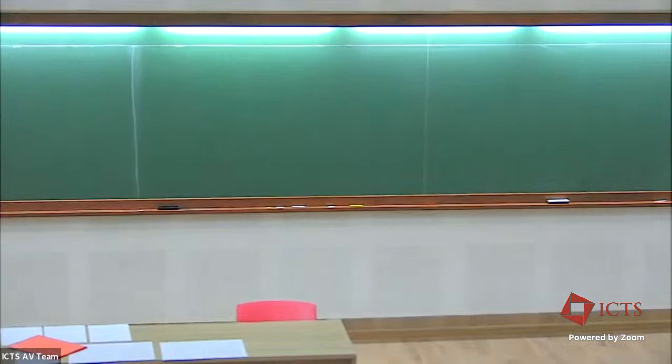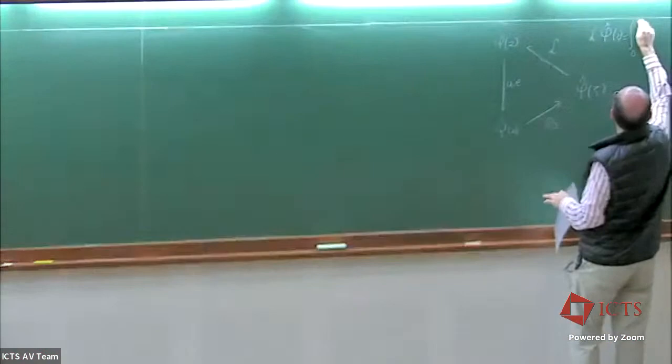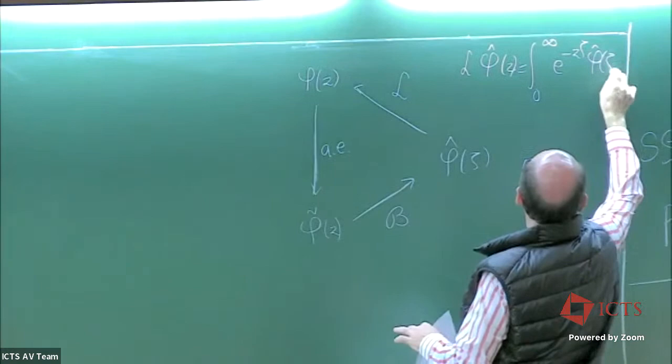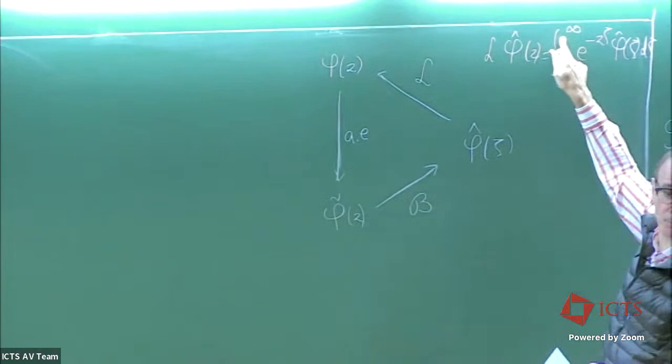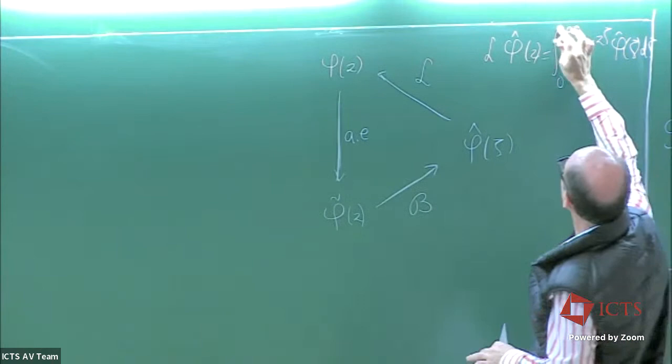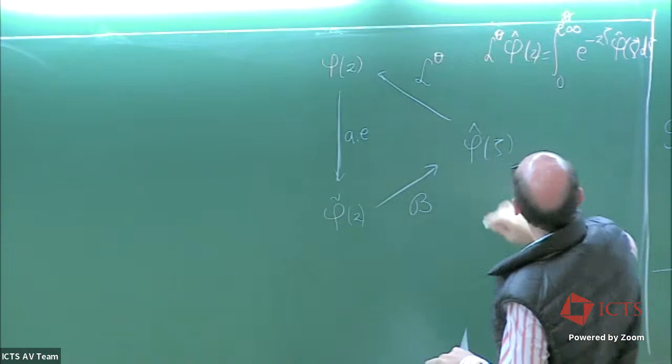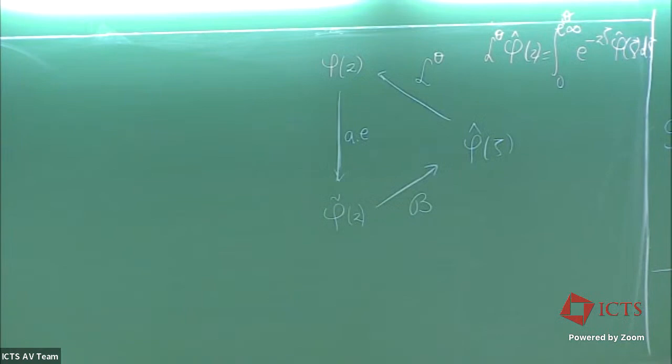The usual formula: it's the integral from 0 to infinity of exponential minus z·zeta · phi-hat of zeta d·zeta. Usually you use the positive real half-line, but why not use any ray? So I put a theta here to remember the direction along which I am computing my integral. So that's where we are going.